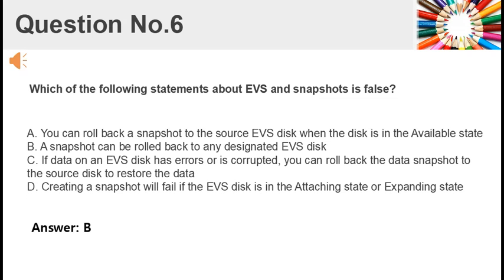Which of the following statements about EVS and snapshots is false? A. You can roll back a snapshot to the source EVS disk when the disk is in the available state. B. A snapshot can be rolled back to any designated EVS disk. C. If data on an EVS disk has errors or is corrupted, you can roll back the data snapshot to the source disk to restore the data. D. Creating a snapshot will fail if the EVS disk is in the attaching state or expanding state. Answer: B.